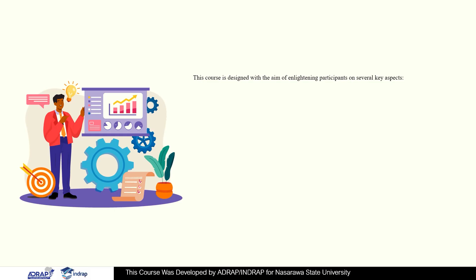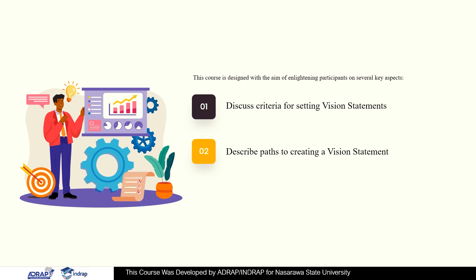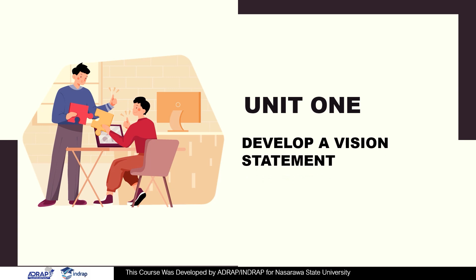At the end of this session, participants should be able to: A, discuss criteria for a certain vision statement; B, the decision paths to creating a vision statement. Unit one: develop a vision statement.